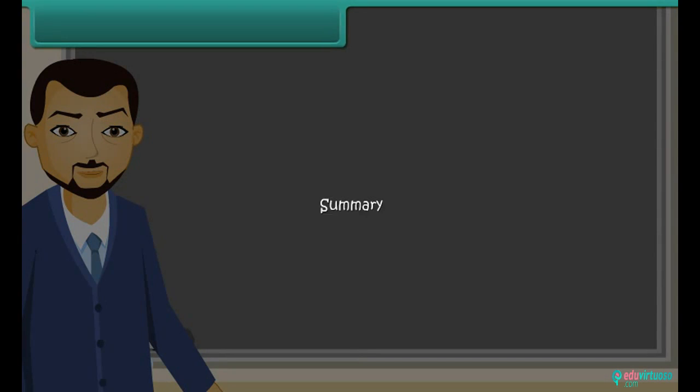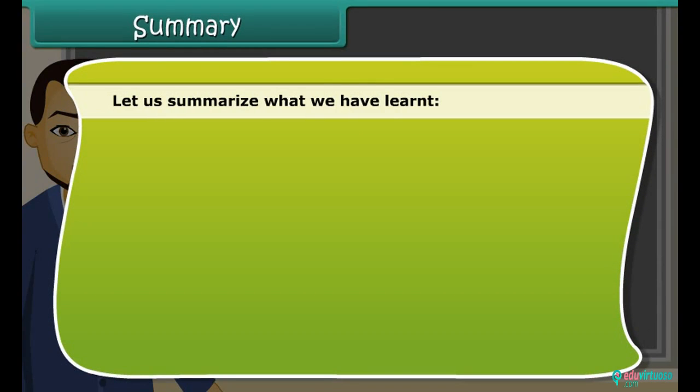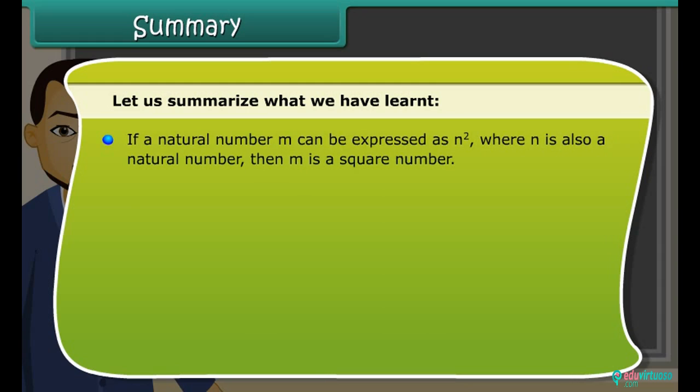Summary. Let us summarize what we have learned. If a natural number M can be expressed as N square where N is also a natural number, then M is a square number. The perfect squares are the squares of the whole numbers. Square of a negative number is a positive number.